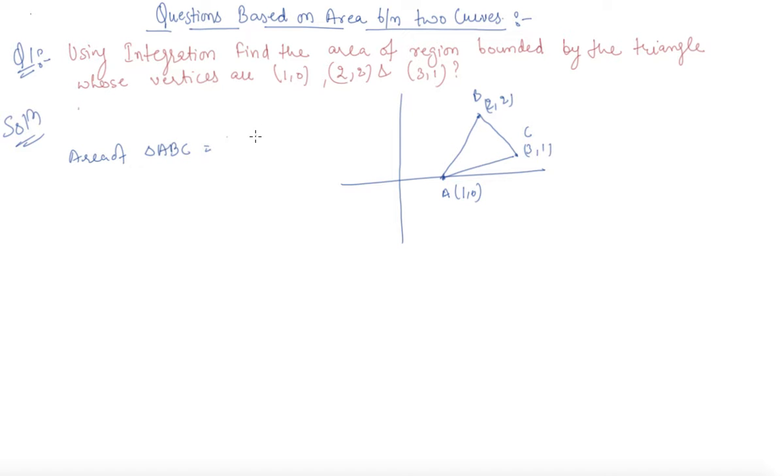Can I write this as area of triangle ABD plus area of trapezium ABD plus area AEC sorry. Area of trapezium BDEC minus area of triangle AEC.